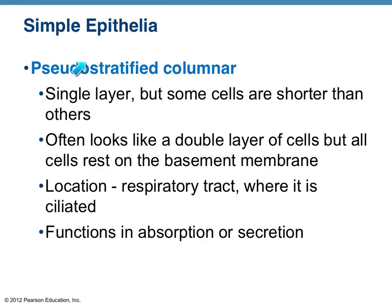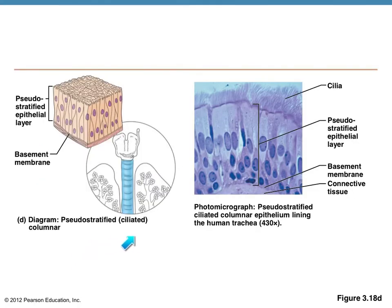An interesting type of epithelium is called pseudostratified. 'Pseudo' means false and 'stratified' means many layers — so they give a false appearance of being stratified. When you look at the picture, they look like many layers, but it's actually a single layer of cells. The primary location of pseudostratified epithelium is lining the respiratory tract, and so it's often ciliated, with plenty of goblet cells secreting mucus to the surface.